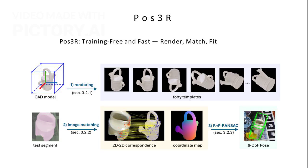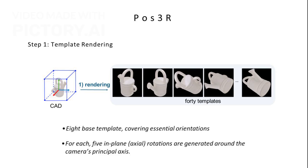Our pipeline, called Poser, is fast and training free. It follows 3 key steps: render, match, and fit. Step 1 is template rendering. For each object, we render 8 base orientations to cover the essential 3D viewpoints. For each base view, we generate 5 additional in-plane rotations to account for axial changes. This gives us a diverse yet compact set of templates for matching.